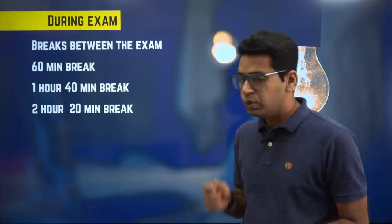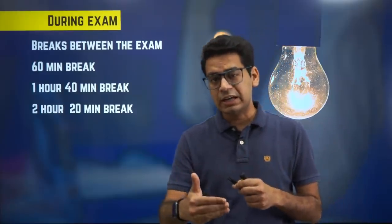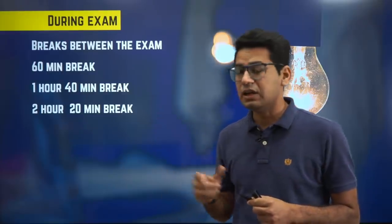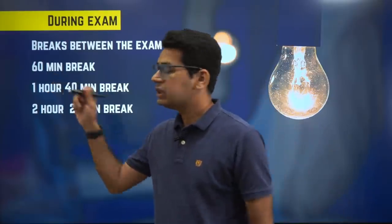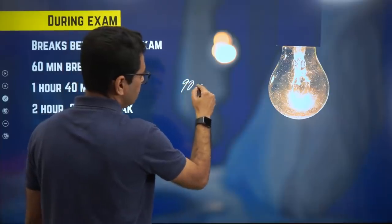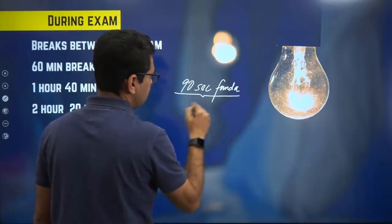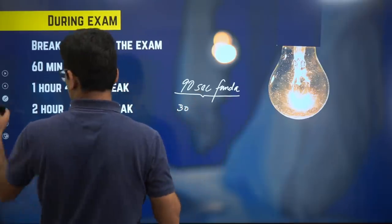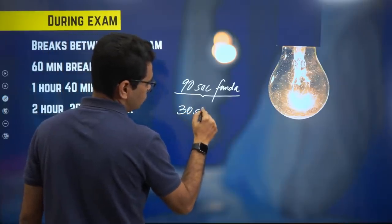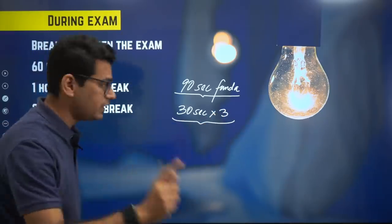So what you have to start doing in the exam — please listen to this very carefully. If you still have time and your paper is on the 4th or 5th, you can give a mock test right now and please try this. So the 90-second funda — what is it? Take a 30-second break, 3 times. That is my funda: 30 seconds into 3. 30 seconds break, thrice. Kab leni hai, kaunse intervals pe leni hai?